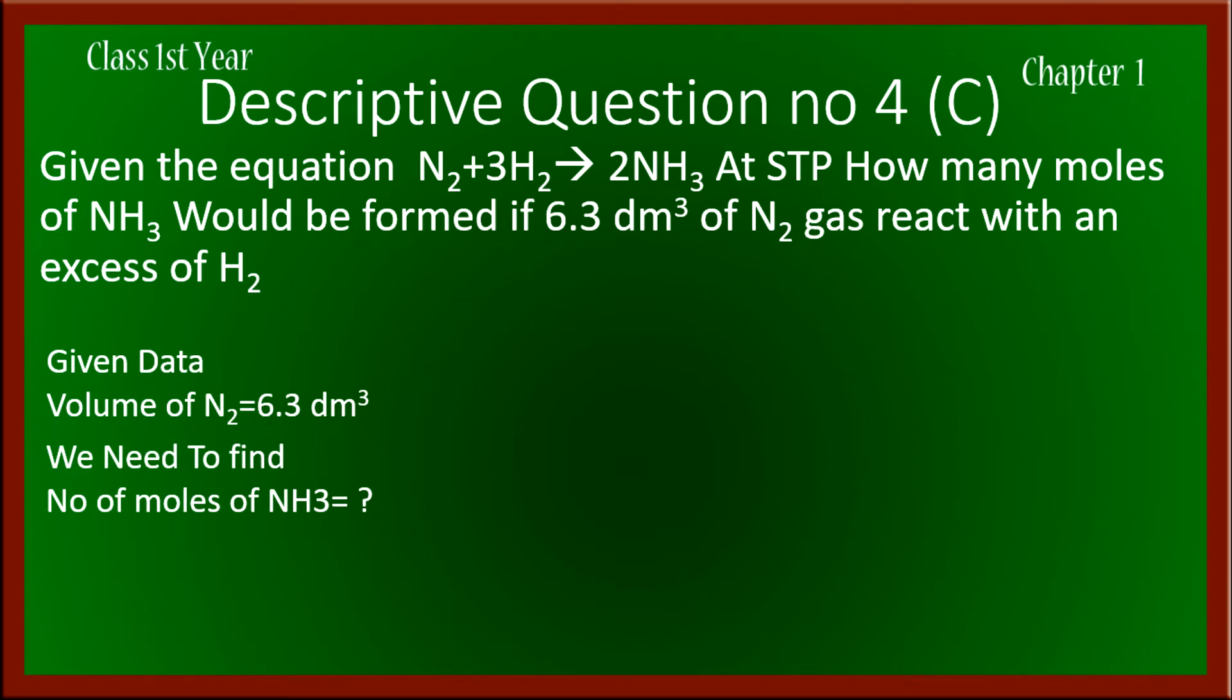What we need to find is the number of moles of ammonia produced from 6.3 dm³ of nitrogen gas. The question can be solved in two steps.